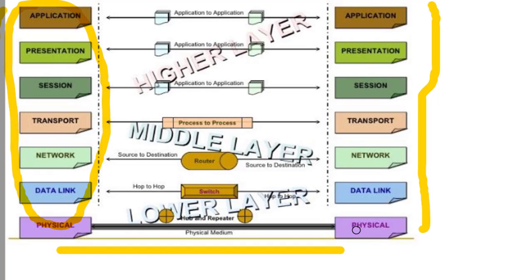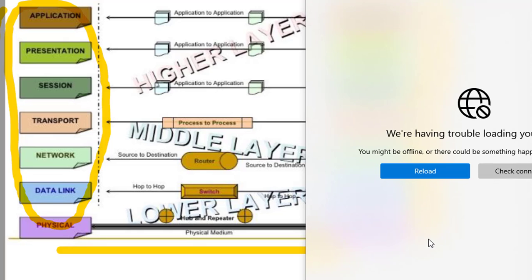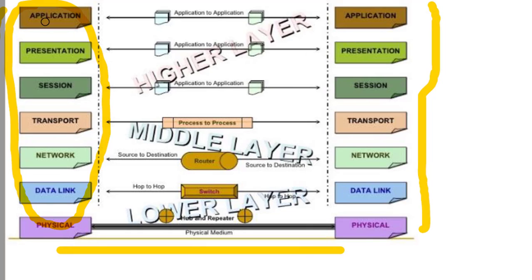The Marathi trick to remember the seven layers is: 'A pori sarak tikde naital del phatka.' A means Application, pori means Presentation, sarak means Session, T means Transport, nai means Network layer, del for Data Link, and phatka for Physical. This is a trick I learned in my second year of B.Tech.